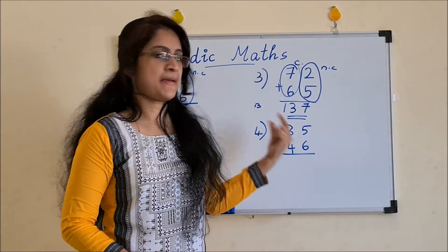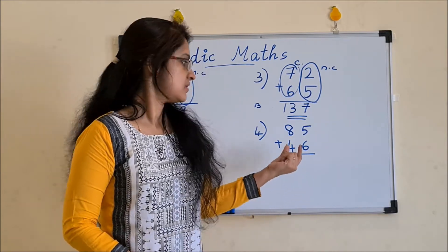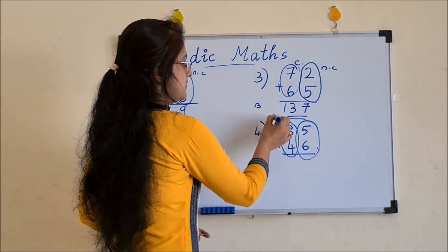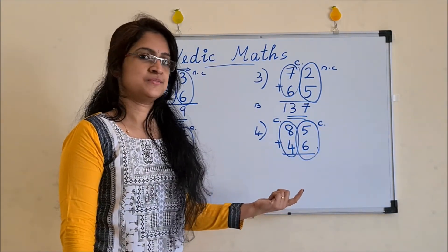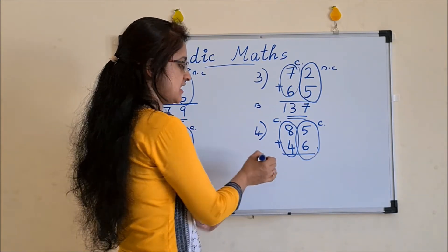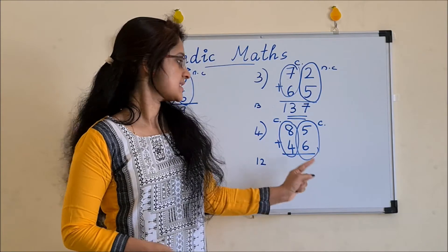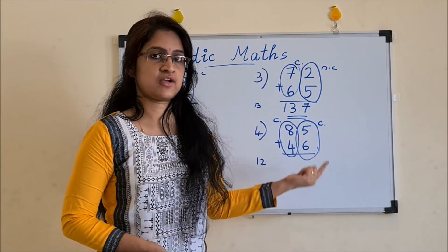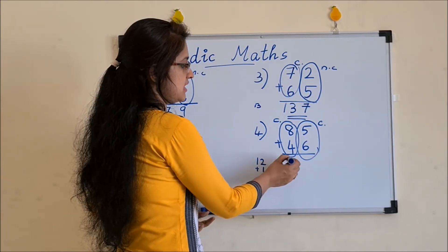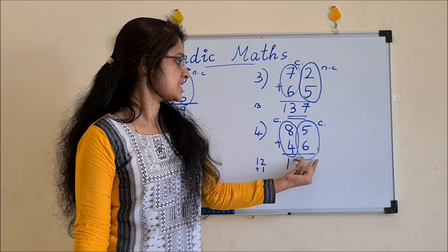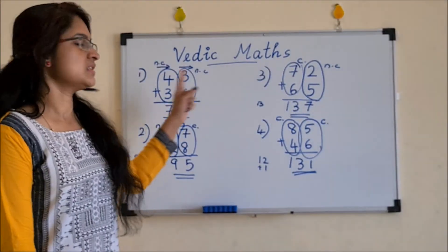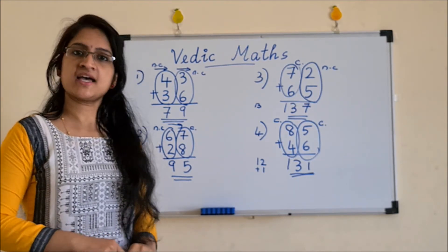This is the last and final type, in which both pairs are carry combinations. The first pair and the second pair are both carry combinations. First, take the leftmost pair, eight plus four — the sum is 12. Keep that in mind, then go to the next pair, five plus six, which is again a carry combination. Since it is a carry combination, add one to the sum, so 12 becomes 13. For five plus six, using the end number concept, the answer is 1. So the answer is 131. These are the four possible combinations or types of two digit addition.